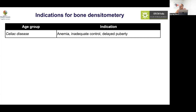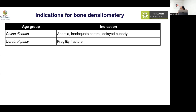In celiac disease, the bone density is less by around minus one typical Z-score, but it is not severe enough to cause fractures. So you don't need to do it in everybody. If somebody has poor disease control, delayed puberty, or anemia, then you can consider it.